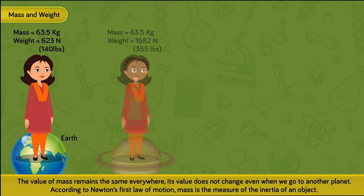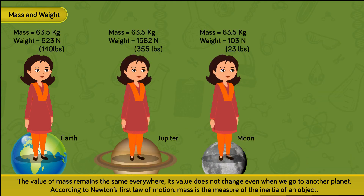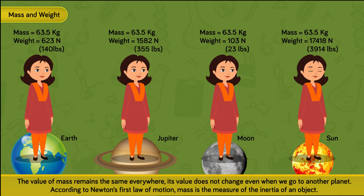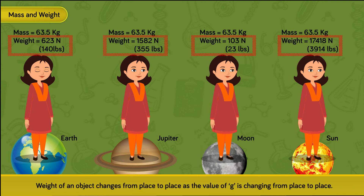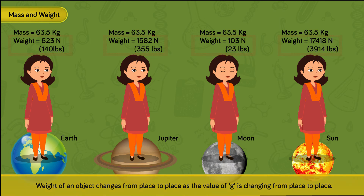The value of mass remains the same everywhere. Its value does not change even when we go to another planet. According to Newton's first law of motion, mass is the measure of the inertia of an object. Whereas weight of an object changes from place to place as the value of G is changing from place to place.